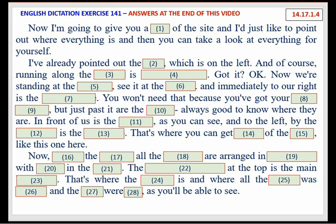we're standing at the entrance. See it at the bottom? And immediately to our right is the ticket office. You won't need that, because you've got your group booking, but just past it are the toilets. Always good to know where they are.